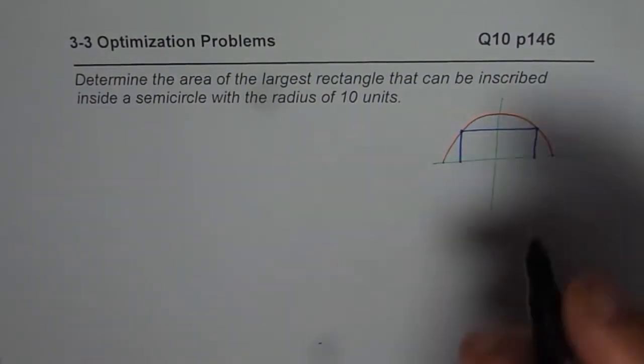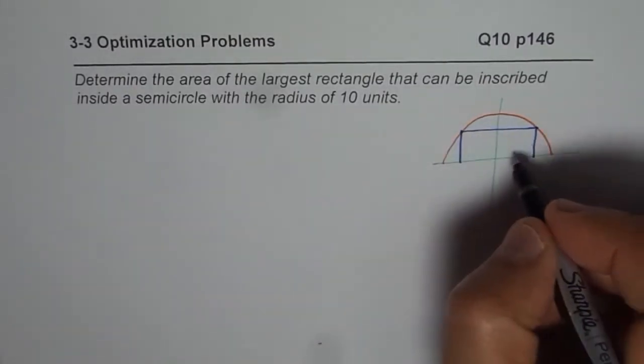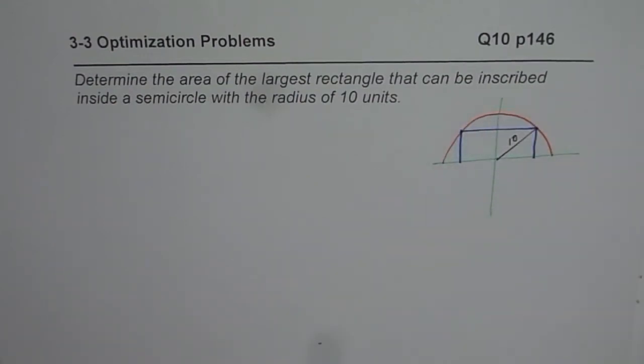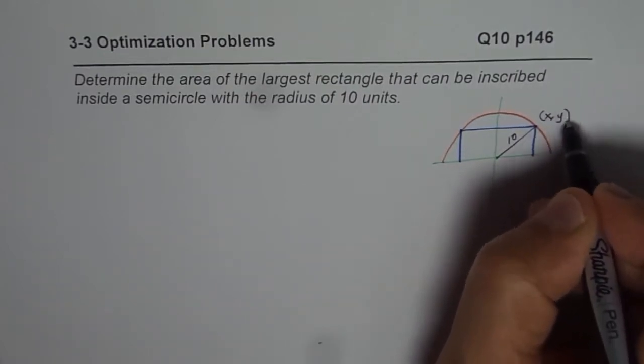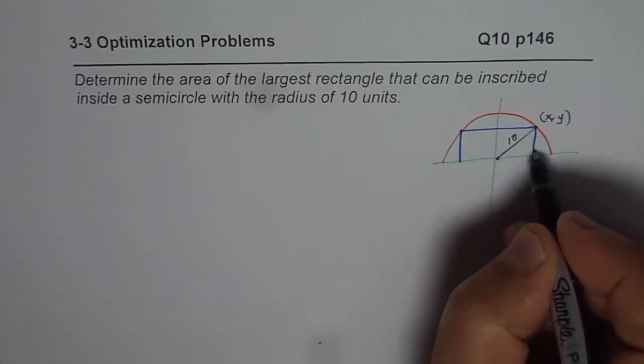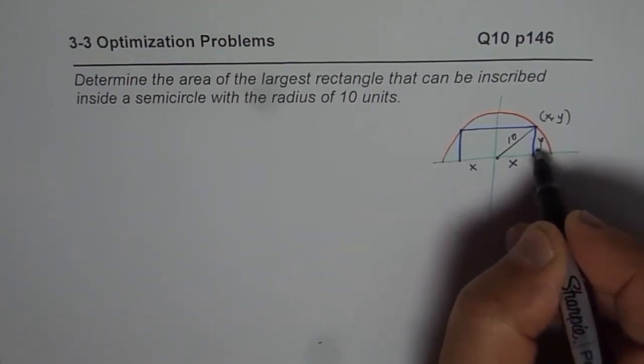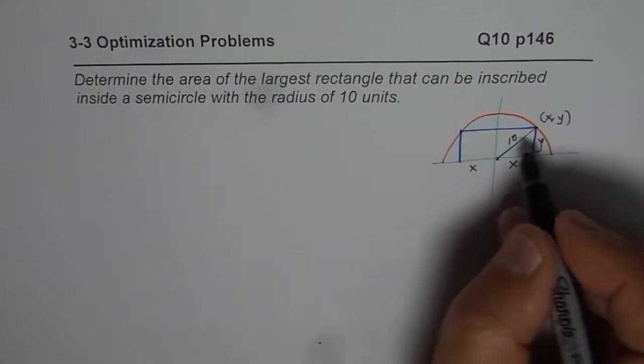What we are also given here is that the radius for the semicircle is 10 units. So this point which is right there should be 10 units away. Any point on the semicircle will be 10 units away. So let us consider a point here whose coordinates are x and y. It means that this particular area here will be x on this side. That length will also be x and this is y.